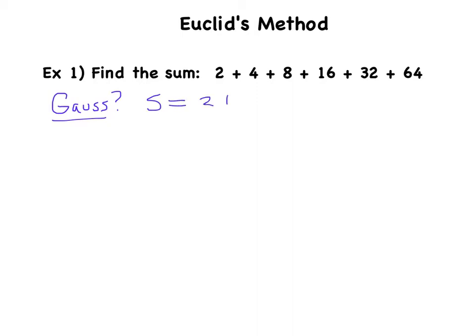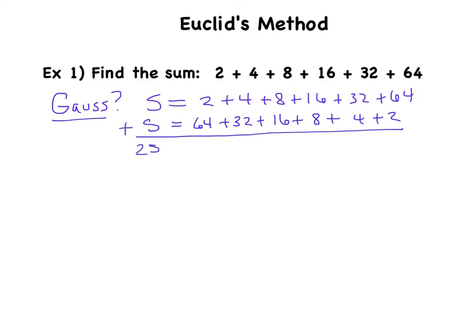Gauss's method would say, well, this is 2 plus 4 plus 8 plus 16 plus 32 plus 64, but it's also 64 plus 32 plus 16 plus 8 plus 4 plus 2. So he would have us add these, and I get 2S equals 68 plus 36 plus 24 plus 24 plus 36 plus 68.